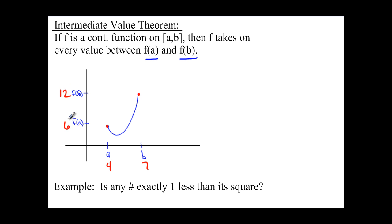So there's a value in here somewhere. There's an f of something between 4 and 7 that would equal, let's say, 7.